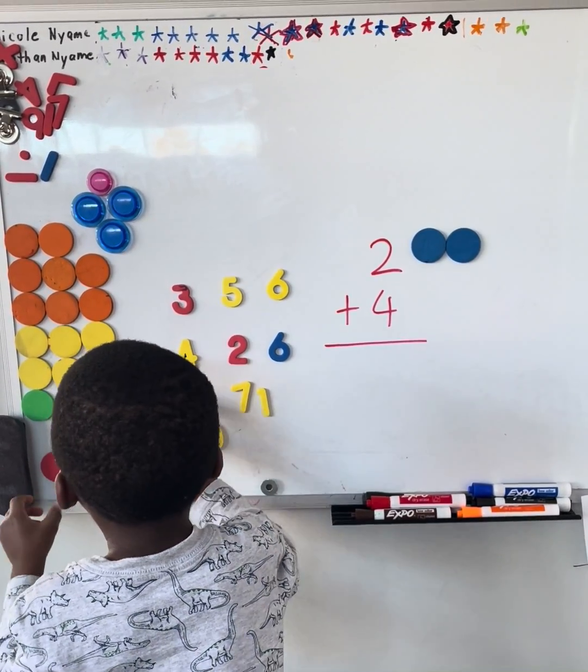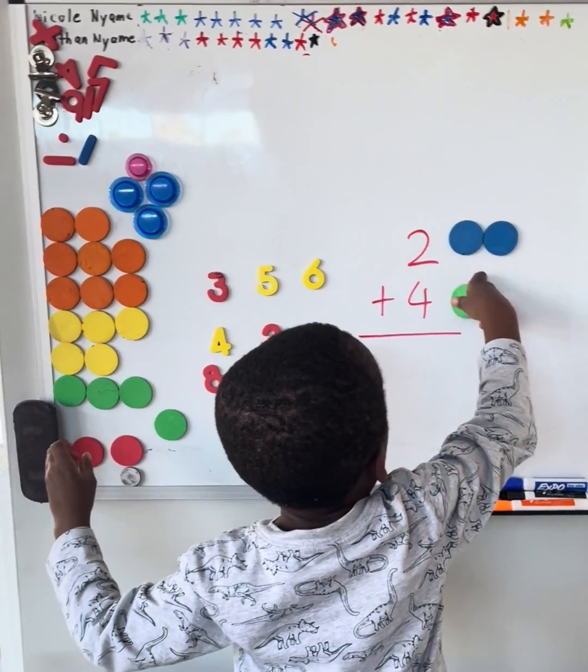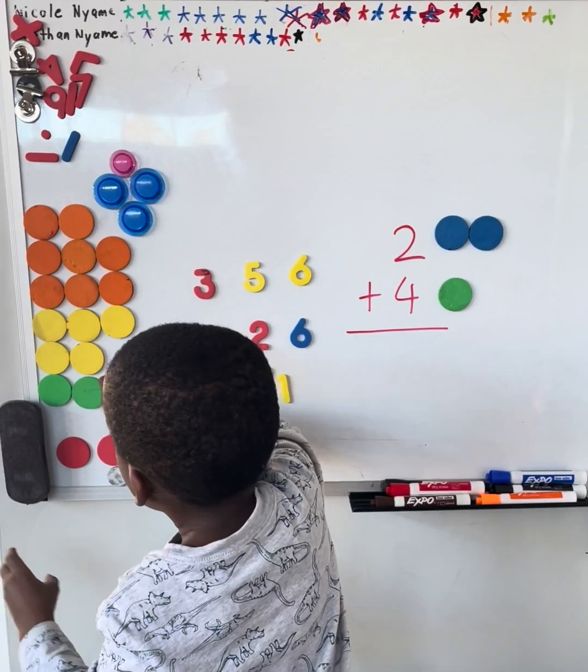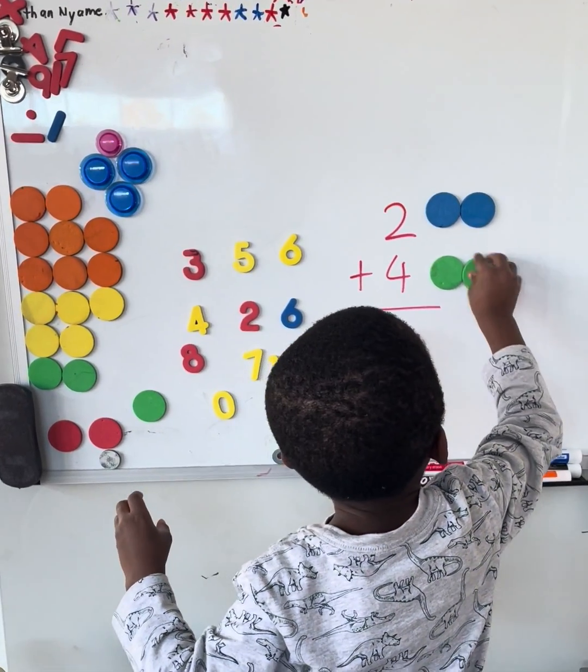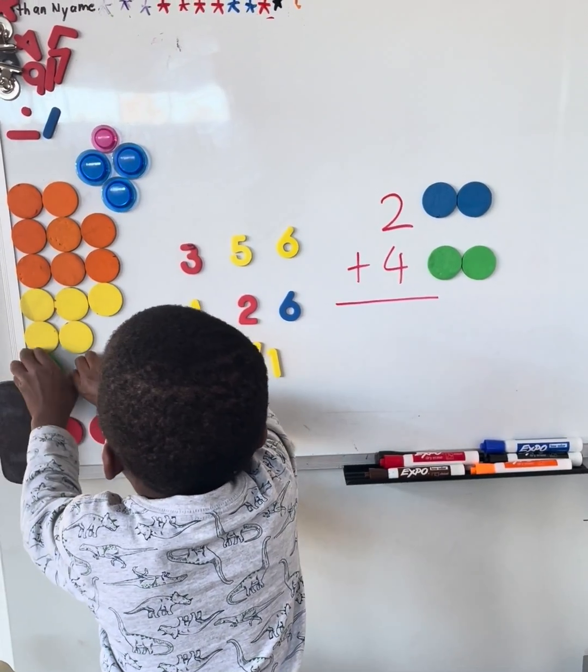So here he's identified which of the circles has enough to make four, which is very important. If he wasn't able to identify that, then I would usually let him get through and figure out that he may not have enough to make four.